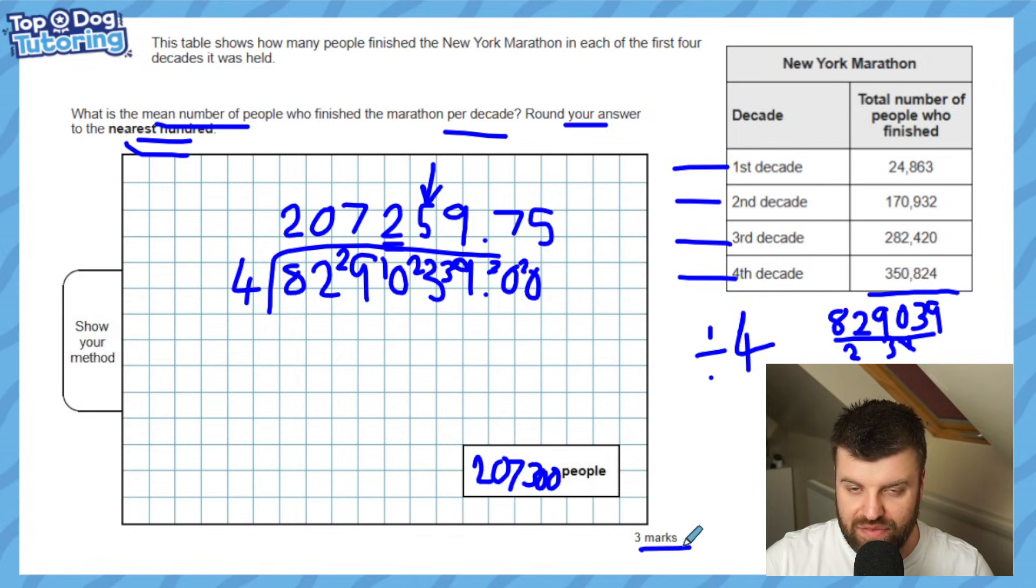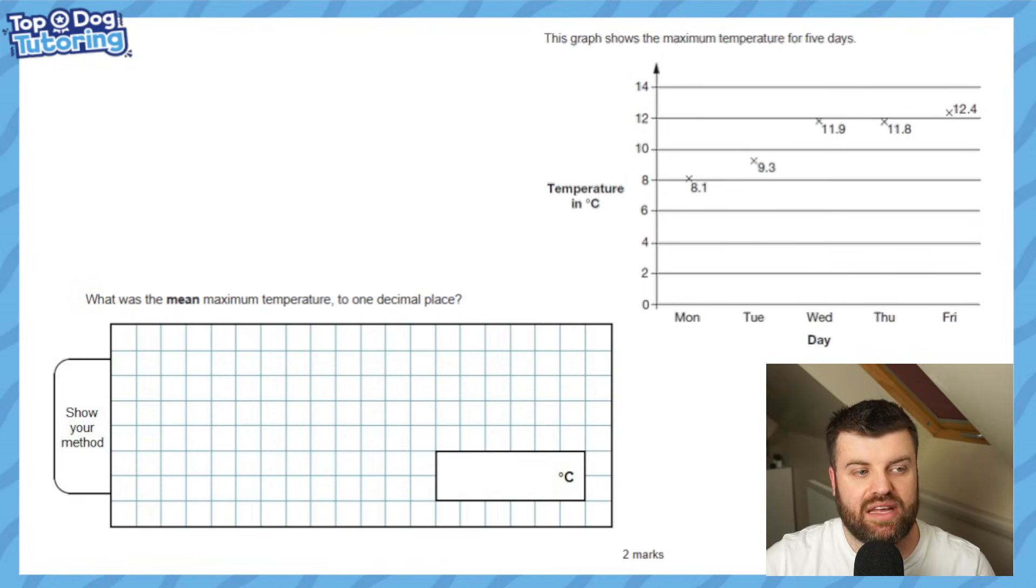You have to be really on the ball. When we get a mean average question, it's usually just part of the bigger picture. Let's take a look at this one - slightly more simple, two marks straight up. What is the mean maximum temperature to one decimal place? We've got a graph that gives us the maximum temperature on each day. We've got to use our formula - the total divided by how many data points. Feel free to pause the video and see if you can calculate it yourself.